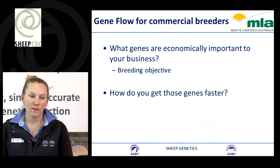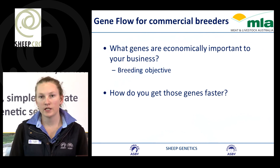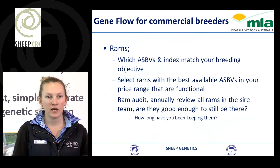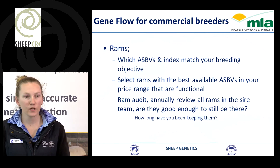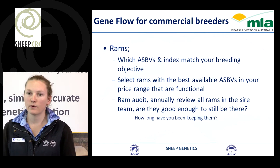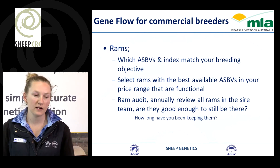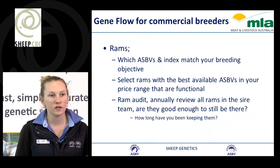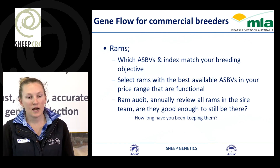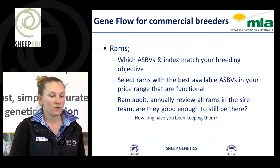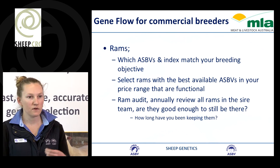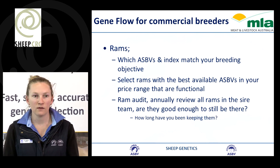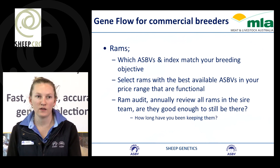For commercial producers thinking about genes coming into their business, focus on traits important to your breeding program and get those genes flowing through the flock faster. For rams, select animals with breeding values and index results that suit your breeding objective, choosing rams with the best breeding values that are also functional and structurally sound. It's also good to do a ram audit — reviewing the sires you're using each year to ensure you're making improved selection decisions and increasing gene turnover within the flock.